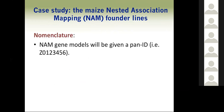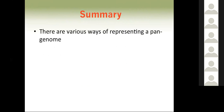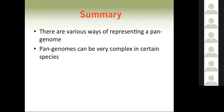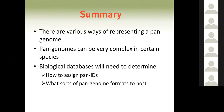Regarding nomenclature, NAM gene models will be given a pan ID — for example, Z0123456. All NAM gene models that share orthology will share a single pan ID. To summarize: there are various ways of representing a pan genome; pan genomes can be very complex in certain species; and biological databases will need to determine how to assign pan IDs, what sorts of pan genome formats to host, and the most efficient way to host pan genomes.